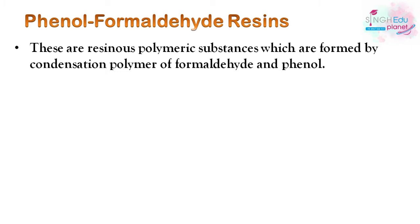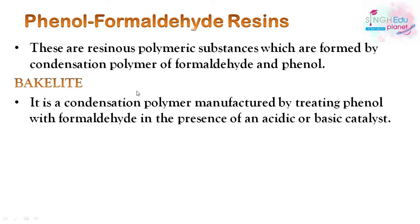Phenol formaldehyde resins are resinous polymeric substances formed by condensation polymerization of formaldehyde and phenol. The most common example is bakelite, which is a condensation polymer manufactured by treating phenol with formaldehyde in the presence of an acidic or basic catalyst.